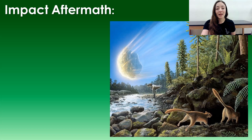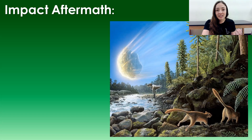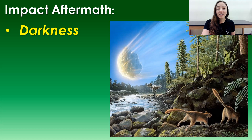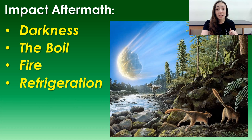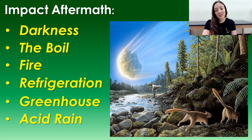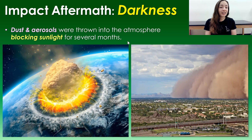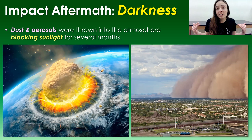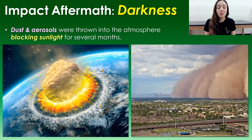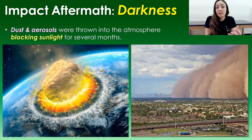It's not just one thing that happened after the impact — warming or cooling. It was actually a multitude of things that happened over different timescales right after the impact. These included darkness, the boil, fire, refrigeration, greenhouse, and acid rain. First, darkness: dust and aerosols were thrown into the atmosphere, blocking sunlight for several months as a result of the impact. This darkness and blocking of sunlight would have devastated photosynthesizers and therefore everything that relied on them — especially microorganisms that breathed the oxygen they provided and microorganisms that ate plants.